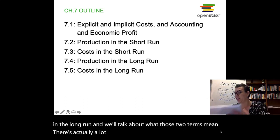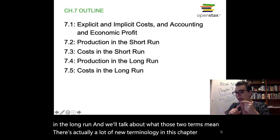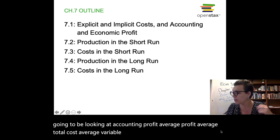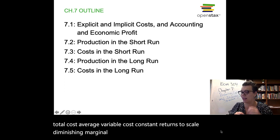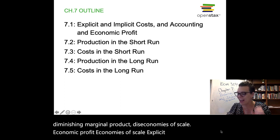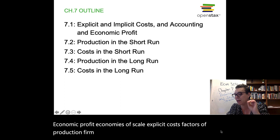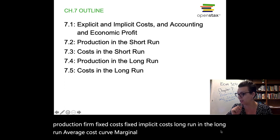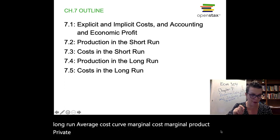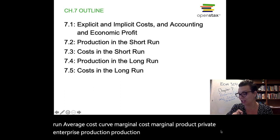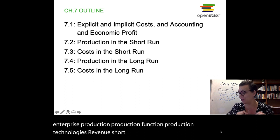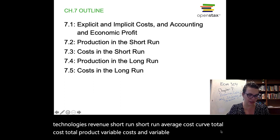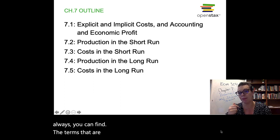There's actually a lot of new terminology in this chapter. We're going to be looking at accounting profit, average profit, average total cost, average variable cost, constant returns to scale, diminishing marginal product, diseconomies of scale, economic profit, economies of scale, explicit costs, factors of production, firm, fixed costs, fixed inputs, implicit costs, long run, the long run average cost curve, marginal cost, marginal product, private enterprise, production, production function, production technologies, revenue, short run, short run average cost curve, total cost, total product, variable costs, and variable input. You can find all the terms being used in this chapter at the end of the chapter — that's a good place to reference if you have questions.